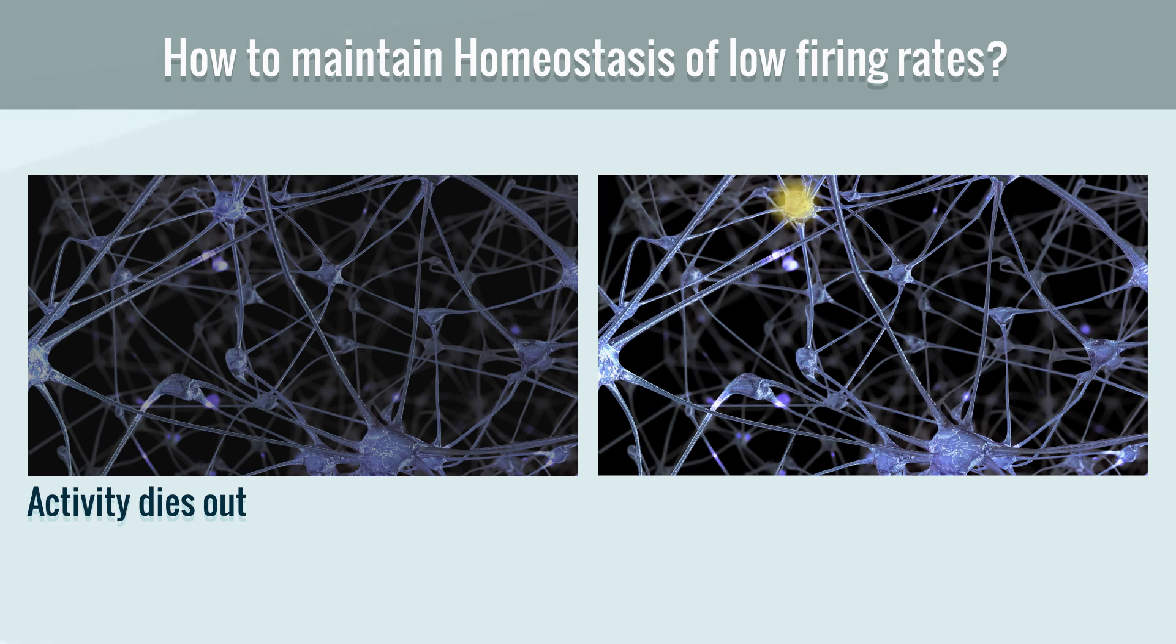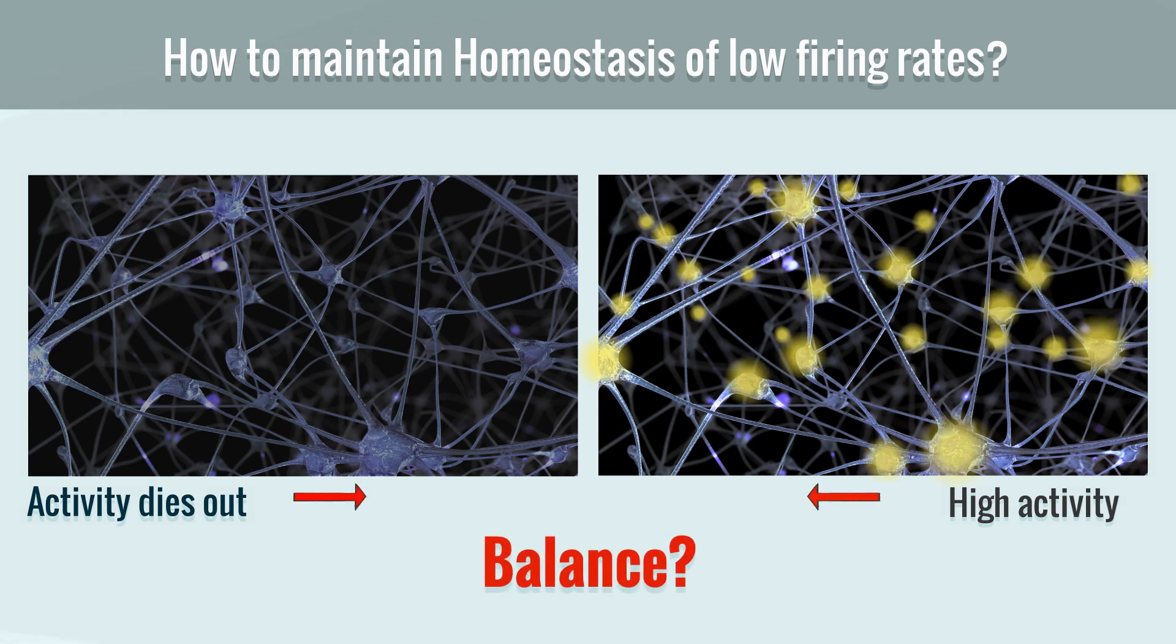Yet, if each neuron stimulates more than one, a high activity will emerge. How can a balanced activity be achieved?